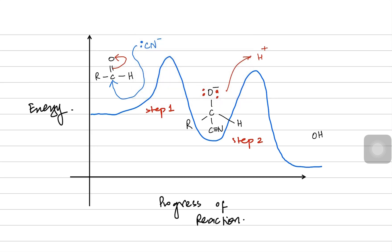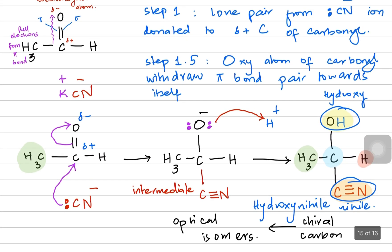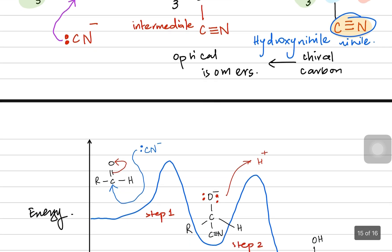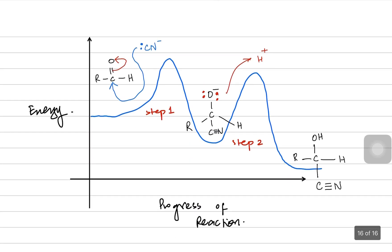In a hydroxynitrile, there is always a chiral carbon which has four different groups on the same carbon. In today's video we talked about the nucleophilic addition reaction and the energy profile diagram. In the next video we'll talk more about aldehydes and ketones — stay tuned, thanks!